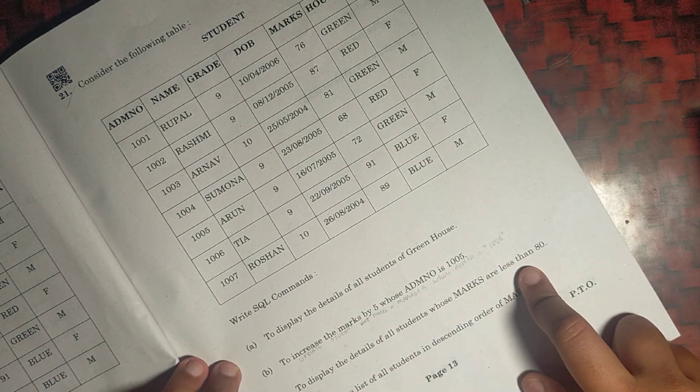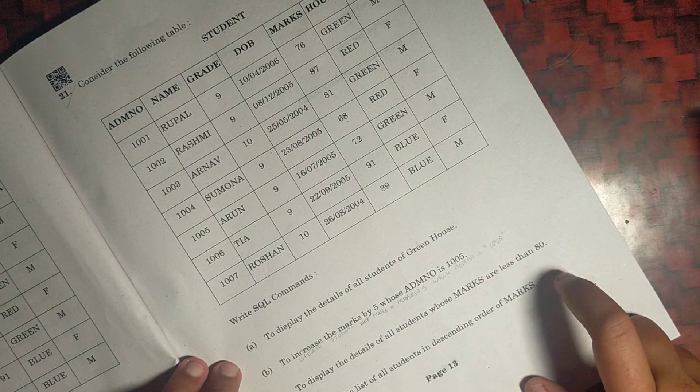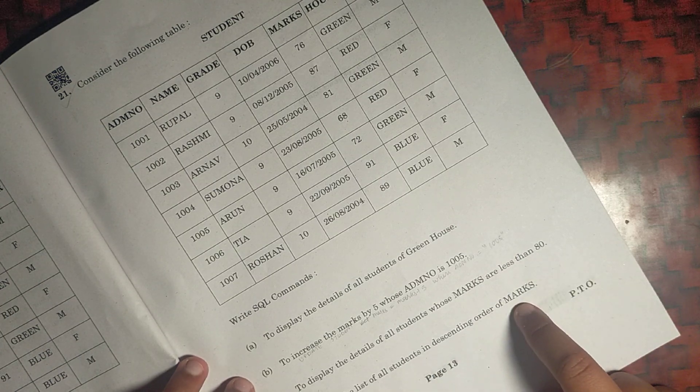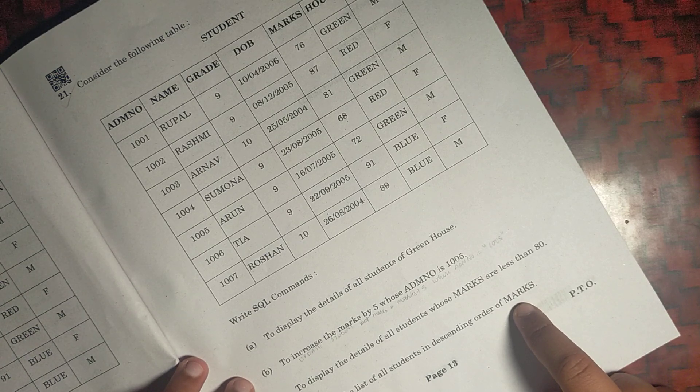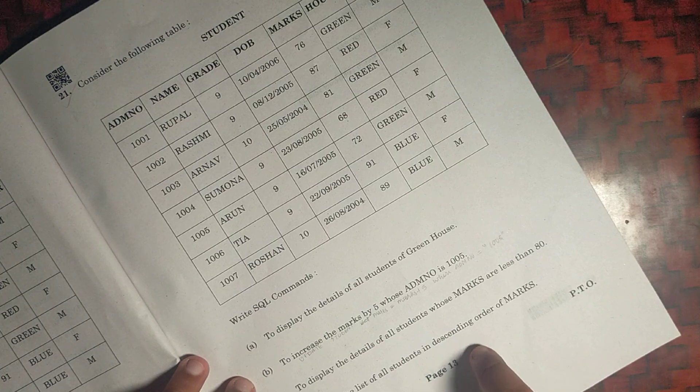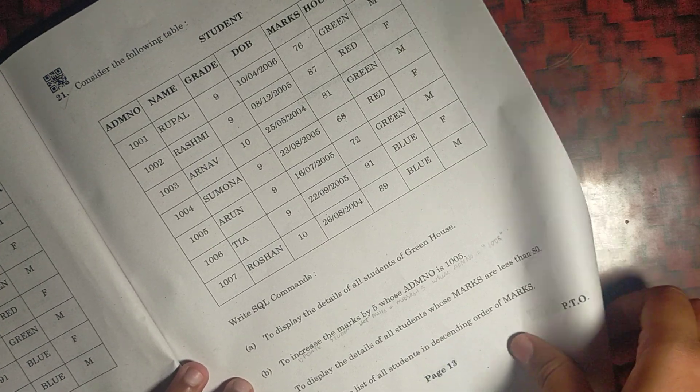This will be SELECT * FROM student WHERE marks < 80. And this will be SELECT * FROM students, this will be SELECT * FROM student ORDER BY marks DESC descending.